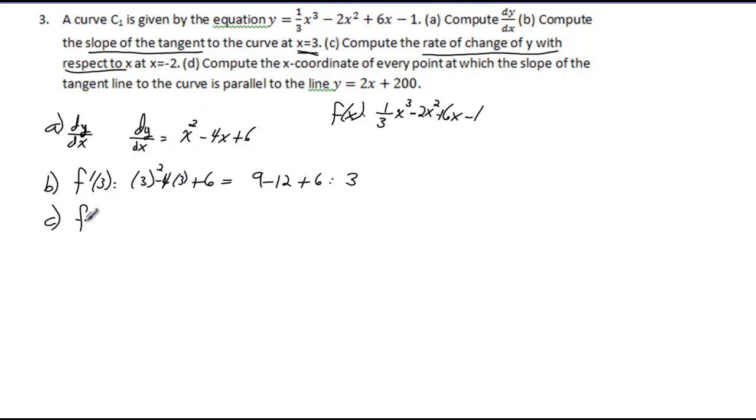In this case, we're finding f'(-2), plugging that into our derivative. We have negative 2 squared minus 4 times negative 2 plus 6. Negative 2 squared gives you positive 4, negative 4 times negative 2 gives you positive 8 plus 6. Four plus 8 is 12, plus 6 gives you 18.